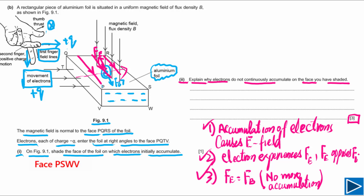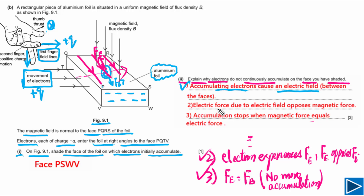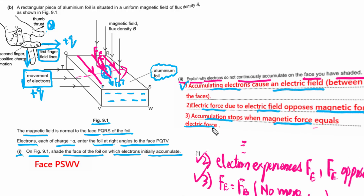This is how to write a proper answer. The three marking points are: first, accumulating electrons cause an electric field; second, the electric force due to the electric field opposes the magnetic force; and third, accumulation stops when these two forces are equal.